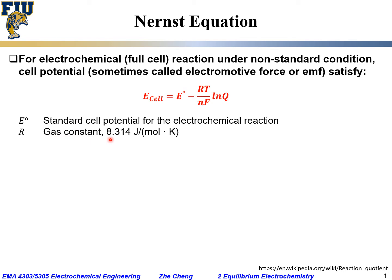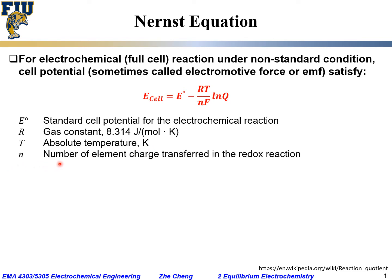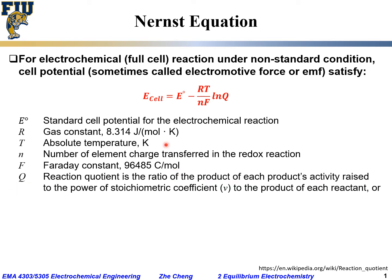R here is the gas constant, 8.314 joules per mole per Kelvin. T is the absolute temperature in Kelvin. N is the number of elementary charges — the number of electrons transferred in this overall electrochemical redox reaction. F is the Faraday constant, 96,485 coulombs per mole.